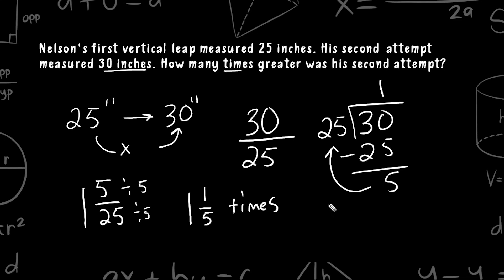Now, another way we could have thought about this problem is to note that he did in fact jump 5 inches greater than his first attempt. So what we could do then is we could just take 5 and compare it to the original jump of 25, 5 over 25, and reduce that, which is equal to 1 fifth. So that increase of 5 inches represents 1 fifth of the original jump.